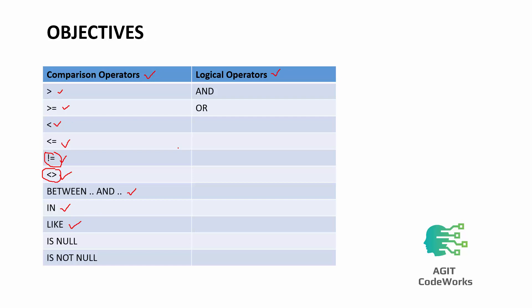We also have the LIKE operator, which searches based on a pattern — for example, wildcard searches like those used on Facebook. A wildcard search is based on a pattern, such as names that start with 'A' or names that contain 'AB'. We cannot use comparison operators for NULL values — values that are empty or unassigned — so we have two more operators: IS NULL and IS NOT NULL, used for checking whether a particular value is null.